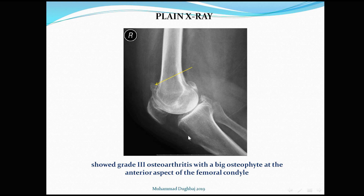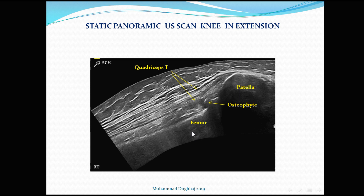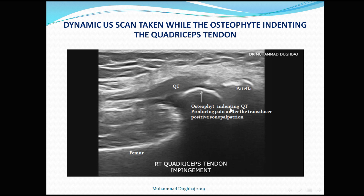In the lateral view we can see a supratrochlear osteophyte with a horizontal direction, with the soft tissue of the quadriceps tendon nearby. We expect that during flexion this osteophyte causes compression over the quadriceps tendon, producing true quadriceps tendon impingement. On static panoramic ultrasound view in extension, we can identify the patella, quadriceps tendon, femur, and the supratrochlear osteophyte. In flexion, the quadriceps tendon appears edematous and swollen compared to its distal and proximal parts, and the osteophyte can be seen compressing the tendon.